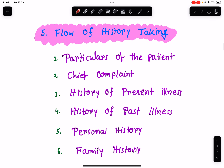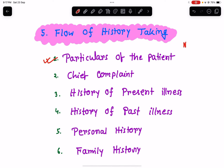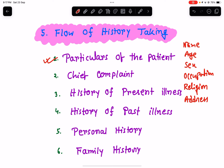Now, the flow of history taking. I have already discussed this in my previous lecture. The flow remains the same for any system. First of all, you need to take the particulars of the patient: the patient's name, age, sex, occupation, religion, address, and date of admission to the hospital.